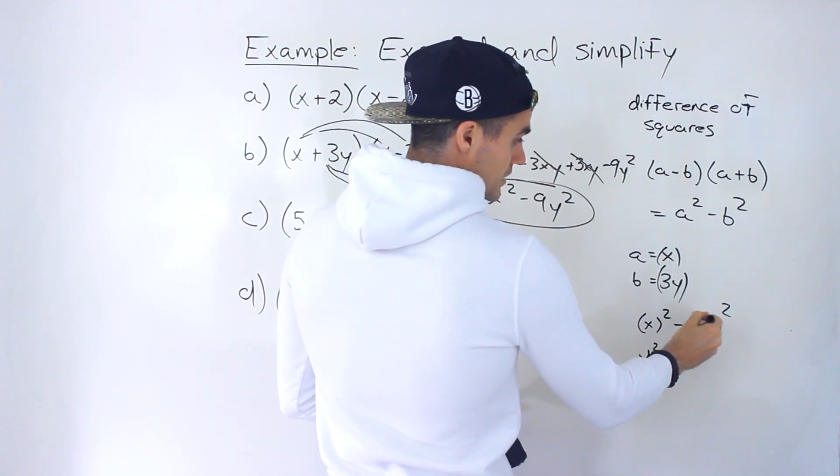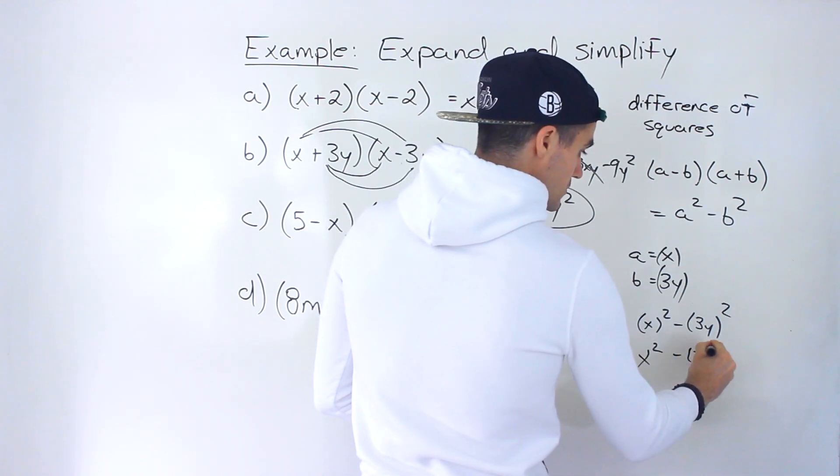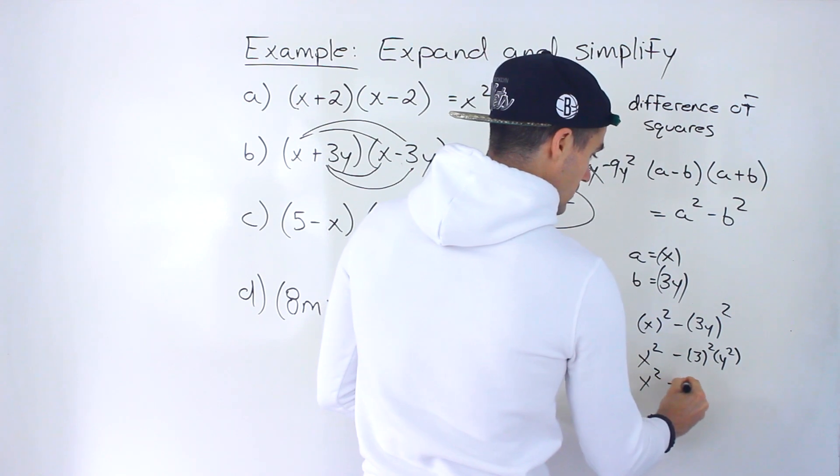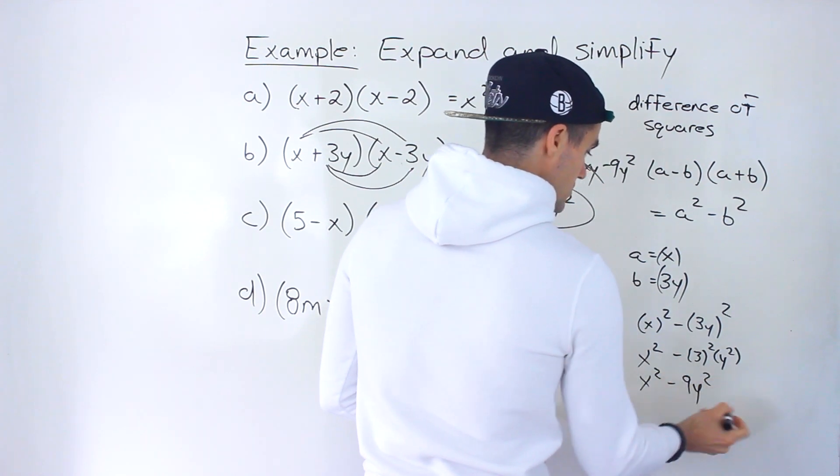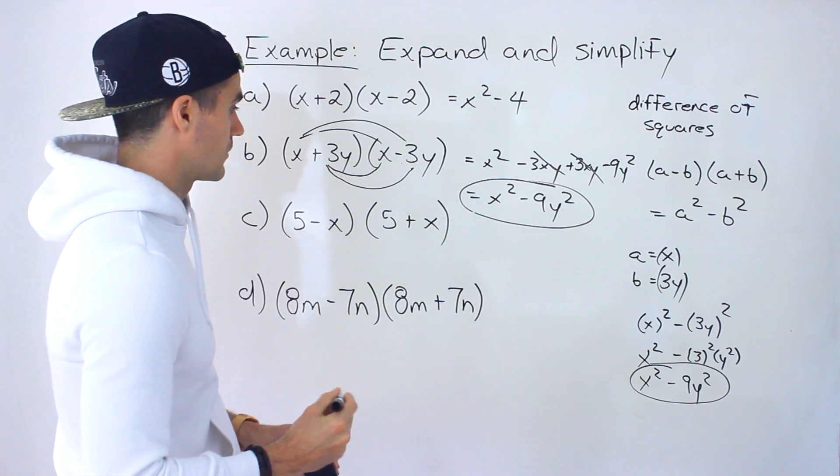This would just be x squared. This here, because you're multiplying two things and then the exponent on the outside, you take both of those things to that exponent. So you'd end up with x squared minus 9y squared like that. So notice you get the exact same thing as we got over here.